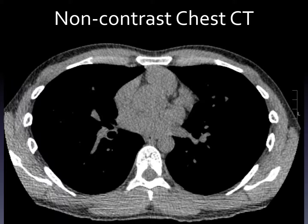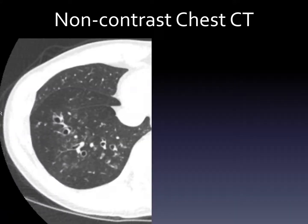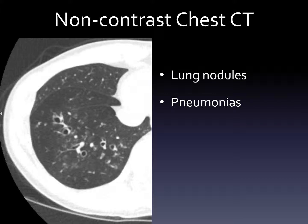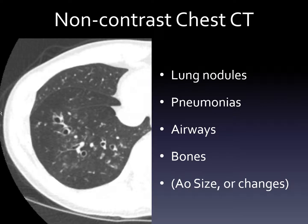So if we need a CT, let's talk about the different types. The most common chest CT is one where we don't inject contrast into the veins. In these cases, the soft tissues — the muscle, the heart, etc. — all look a similar medium gray. We usually get it to look at the lungs, and injecting contrast in the vein doesn't help as much for the lungs. Non-contrast chest CT is good for nodules, serious infections needing more than a chest X-ray, abnormal airways, bone problems, and sometimes looking at overall aorta size — although usually we use contrast for the aorta.